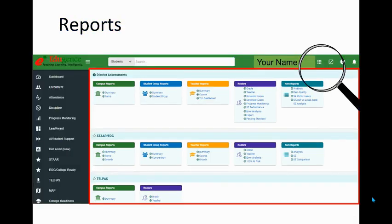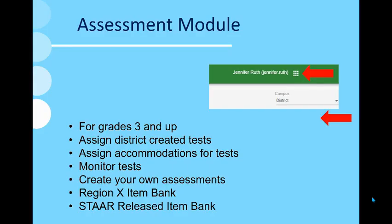So far, we've explored some of the reports that you will use in the center of your EduGents screen — accessed by using the waffle icon in the top right and then choosing Reports. For those of you in grades three and up, another place you'll be going in the top right is the Assessments module, again by clicking the waffle icon and then choosing Assessments.